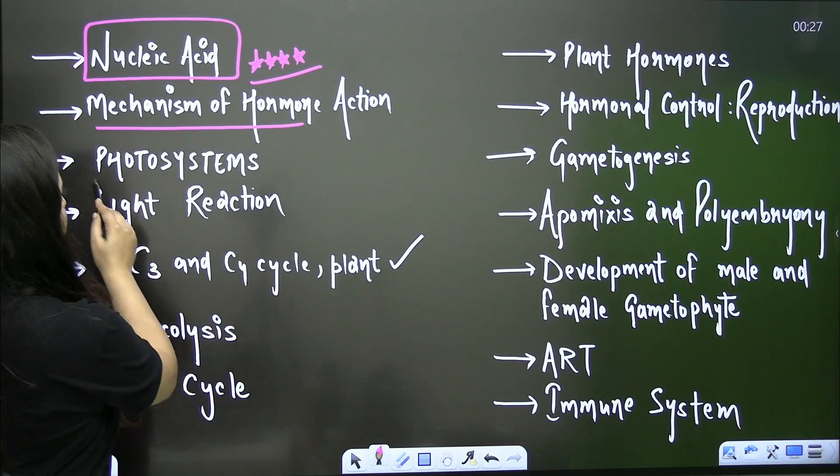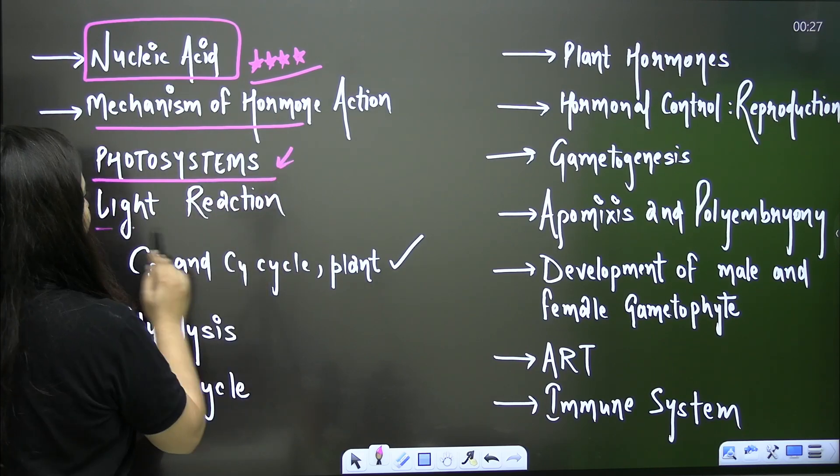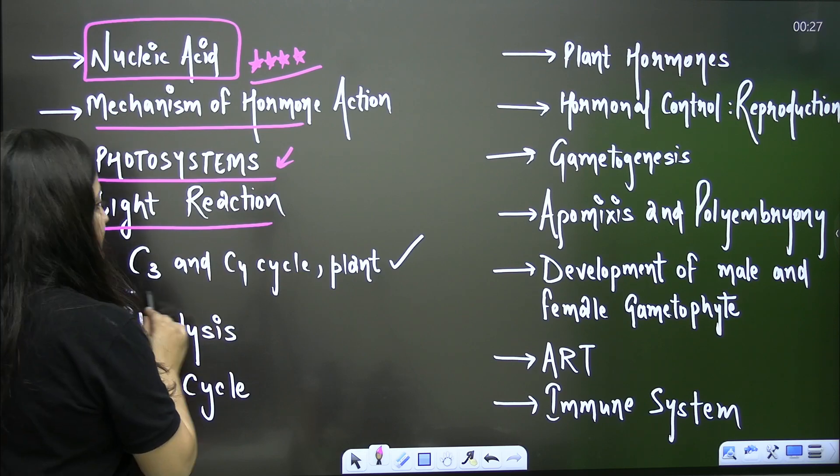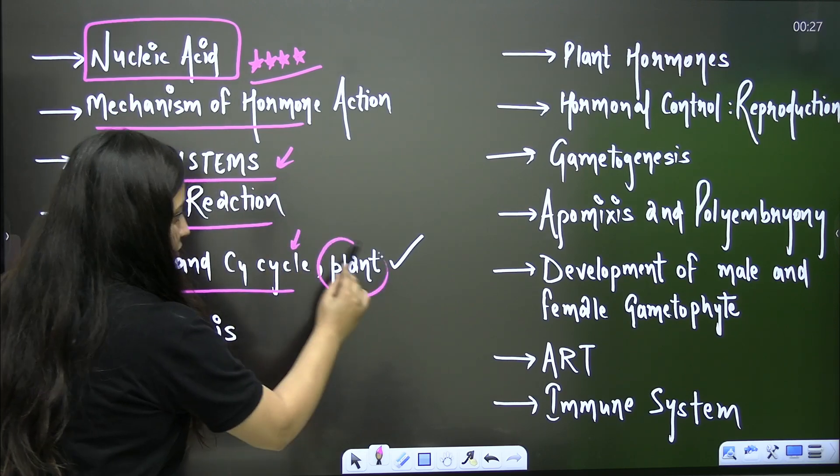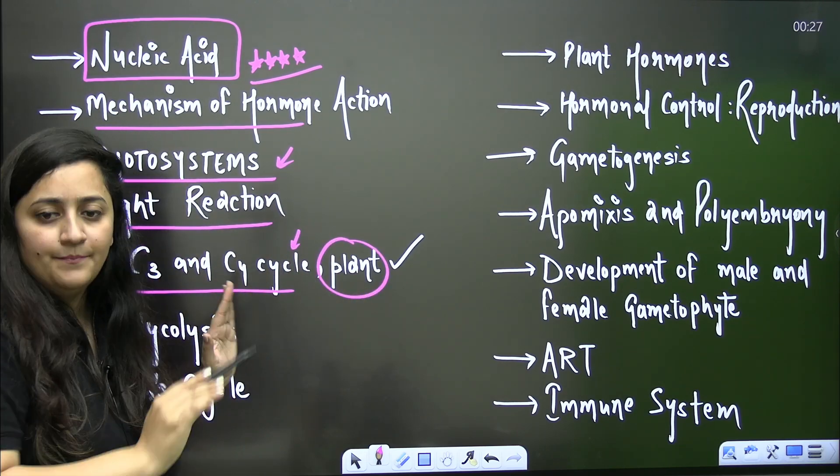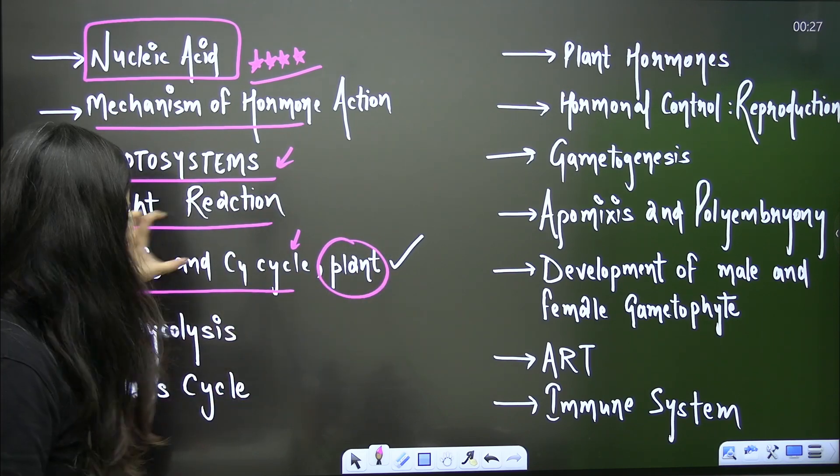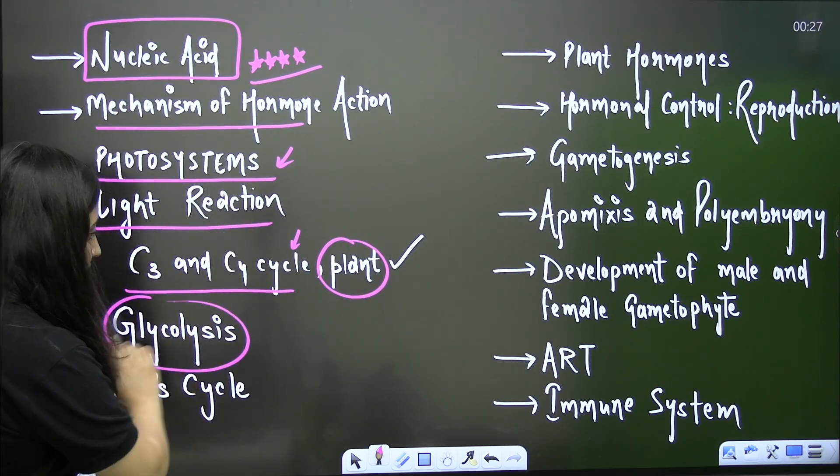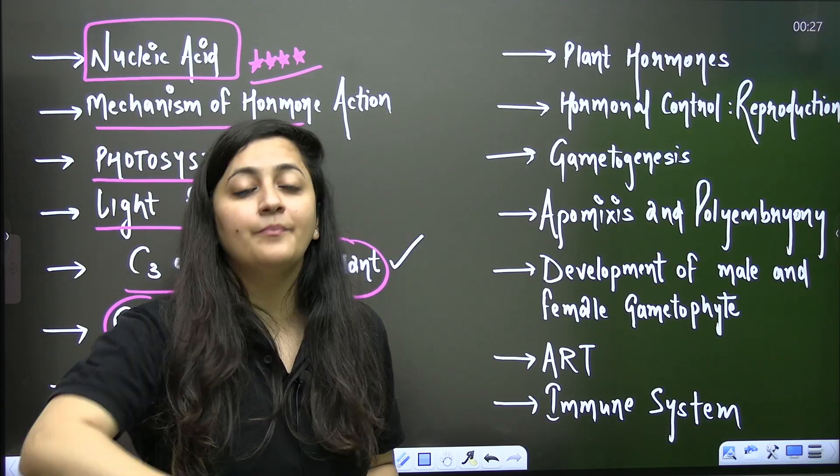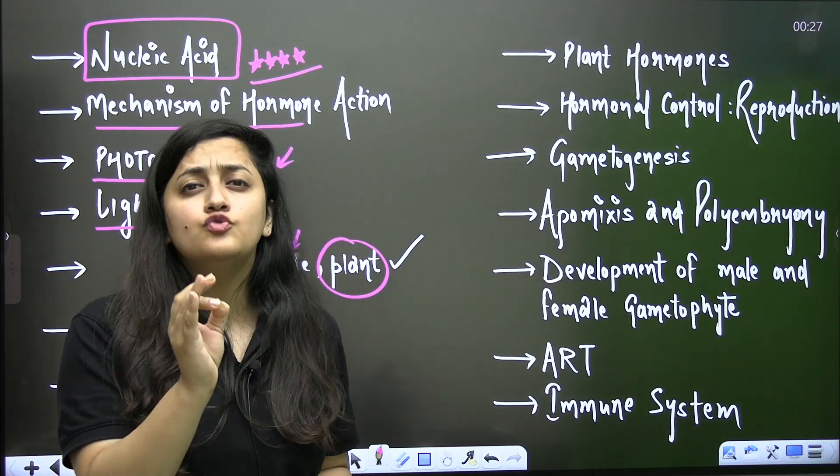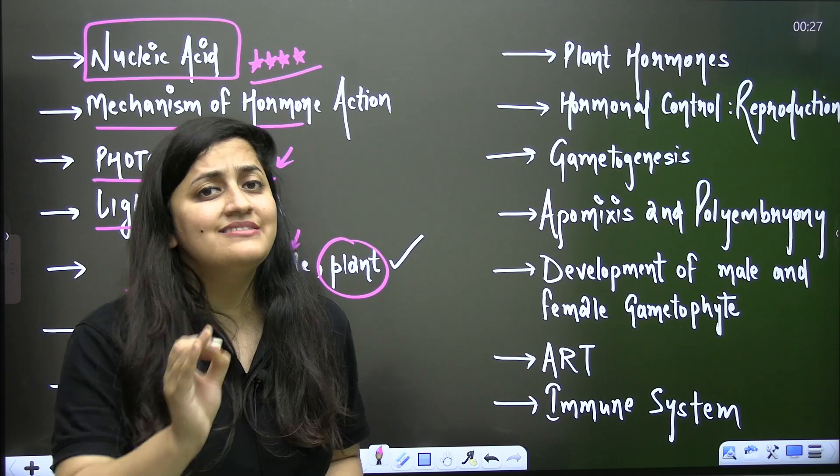Now the next is your photosystems, another important topic. Light reaction which include your Z scheme, C3 C4 cycle and plants - their comparison, their examples. Always you used to get questions from this part. Then now because in plant physiology we just have three chapters, so this time please do not take a chance to miss these three chapters.